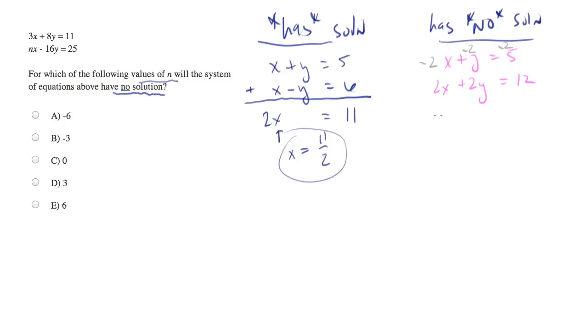And what will we end up with? We'll end up with negative 2x minus 2y equals negative 10. So now I'm dealing with the following system right here. And let's go ahead and add them together.